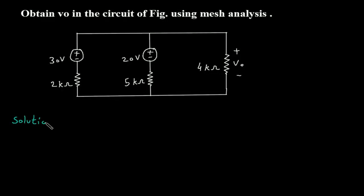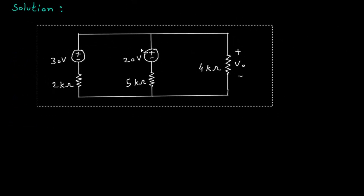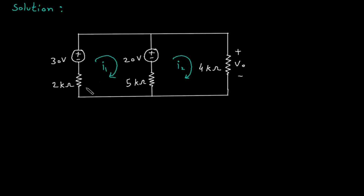Solution. First we will redraw the circuit. Let's assume this is mesh 1 with current I1. This is mesh 2 with current I2. We are assuming the direction of current in the clockwise direction.